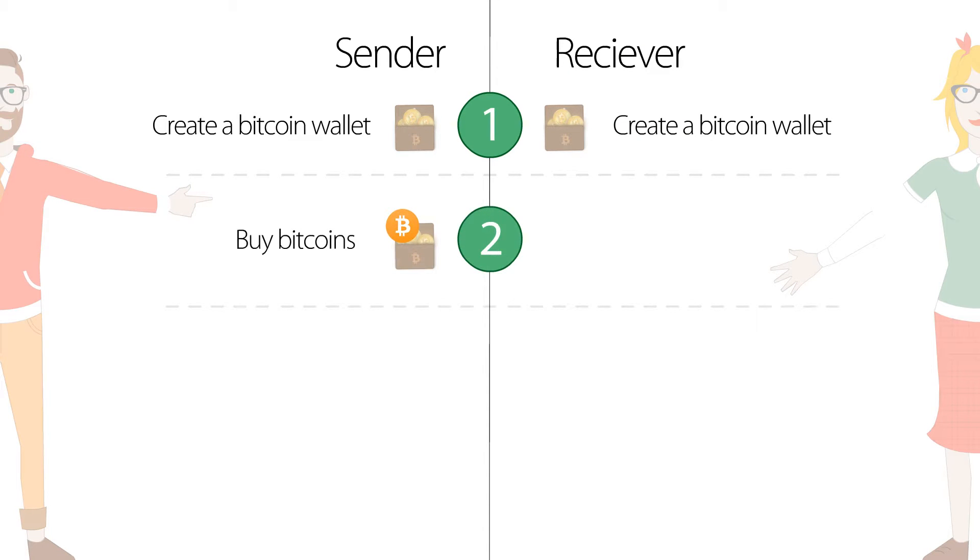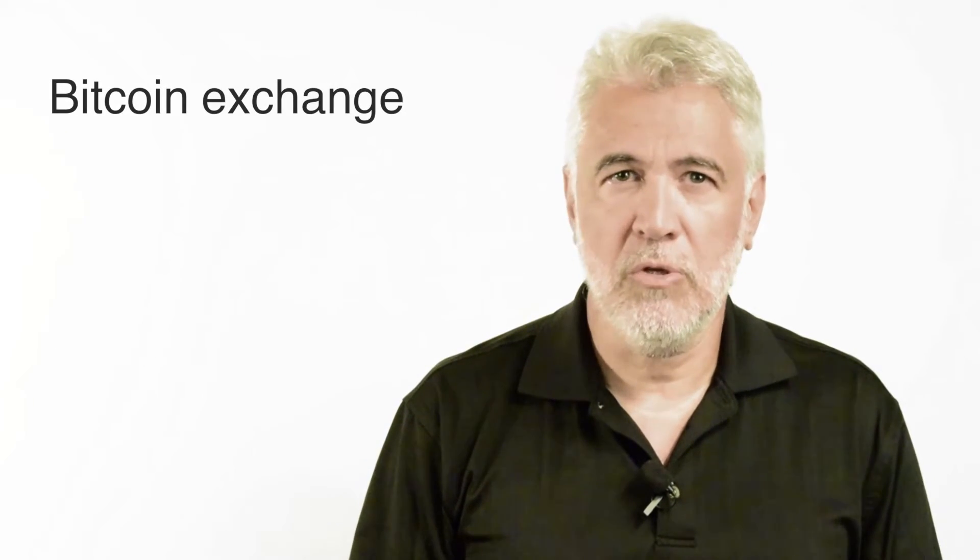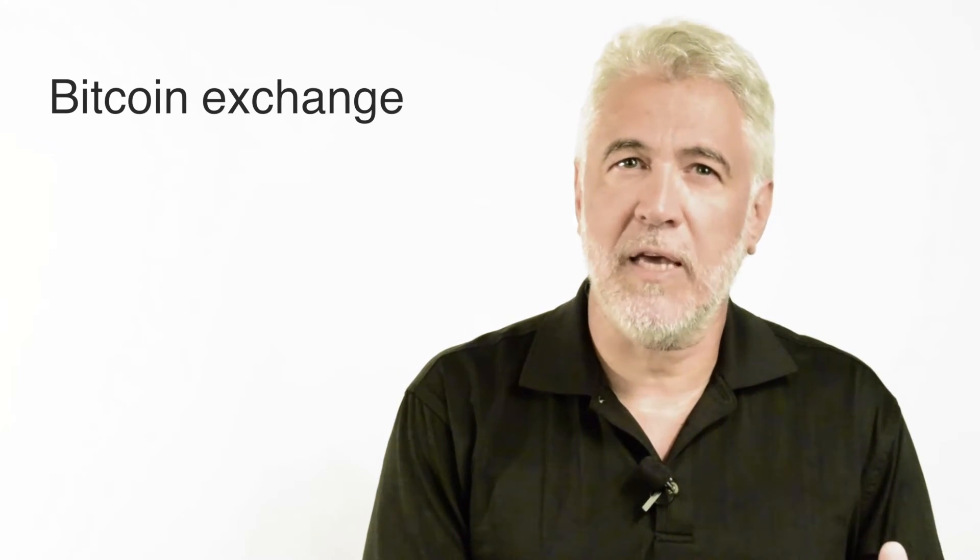These Bitcoins then need to be acquired. You can purchase Bitcoins from a Bitcoin exchange — you can go online, and after registering and providing necessary information, you purchase Bitcoins with your debit card or transfer from your bank account. Once the transaction takes place, you can move the Bitcoins to your wallet.